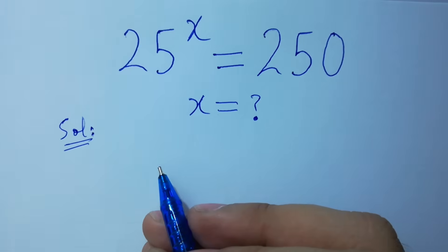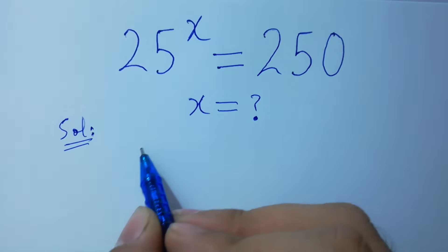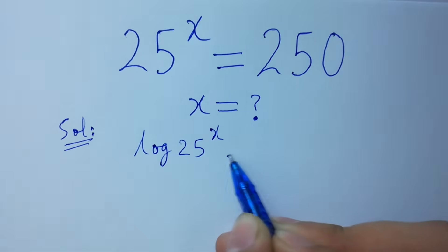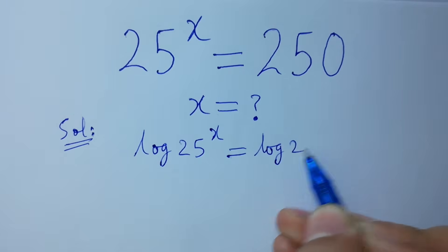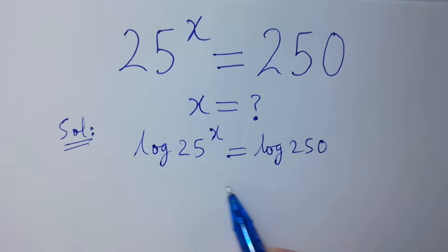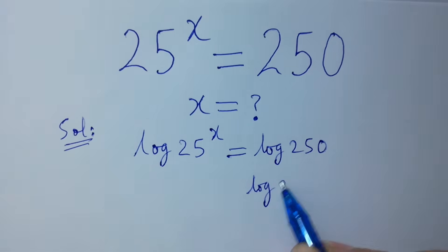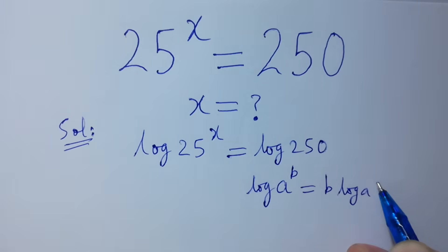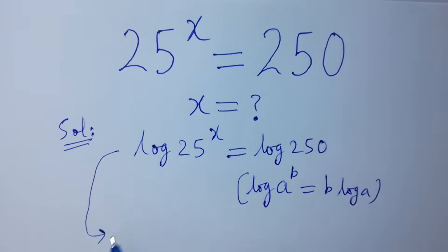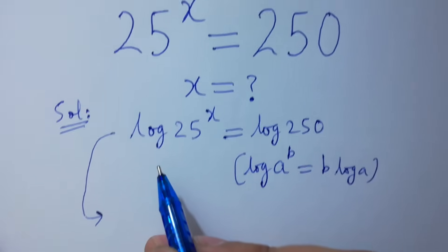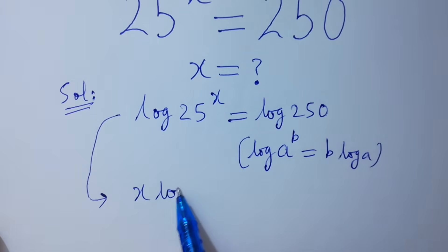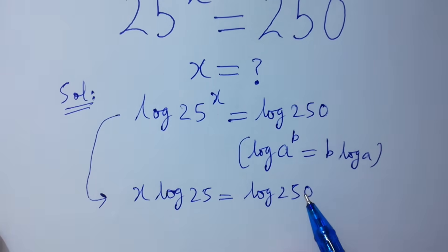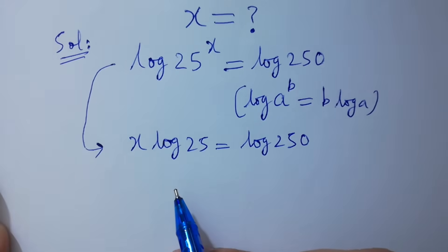First of all, take log on both sides: log 25 to the power x equals log 250. Since log a to the power b equals b·log a, so log 25 to the power x will be x·log 25, equal to log 250 as it is.